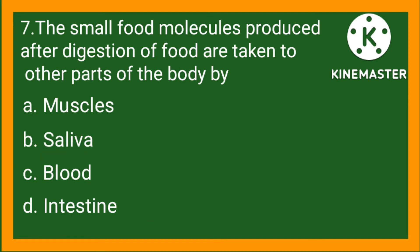Statement number 7. The small food molecules produced after the digestion of food are taken to the other parts of the body by: option A, muscles; option B, saliva; option C, blood; option D, intestine. So the right option is C, blood.